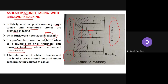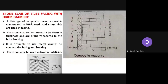As per the height of ashlar masonry, you have to arrange your bricks on the back side. An alternate course of ashlar masonry consists of headers, and this header brick should be used under such projecting courses of ashlar masonry on the front side.